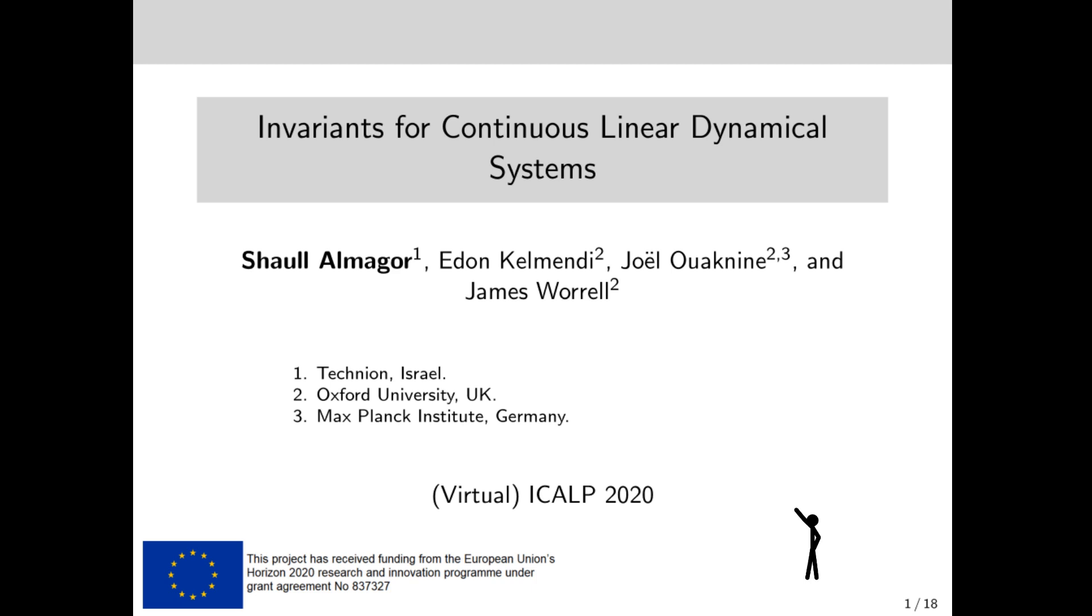Let me start by explaining what continuous linear dynamical systems are. I'll do that by jumping. Now, while jumping, at any point t in time, my position is given by some vector corresponding to my x and y coordinates. My velocity, or directional speed, is given by the derivative. A continuous linear dynamical system is a setting where the speed at each time is a linear function of the position, given by the equation ẋ(t) = Ax(t), where A is some matrix.